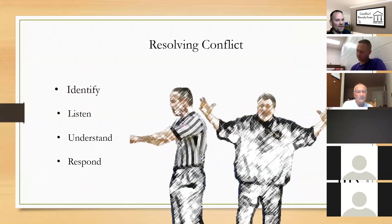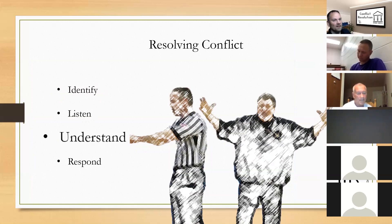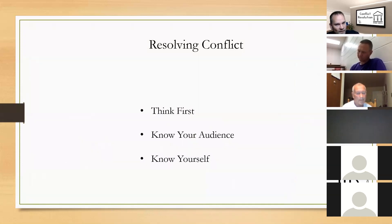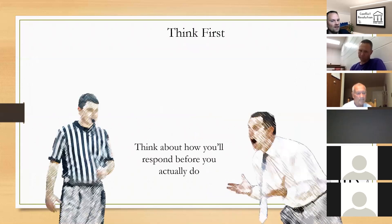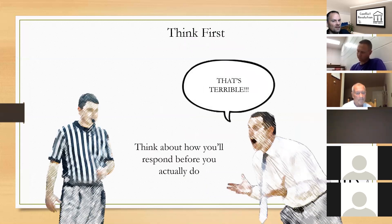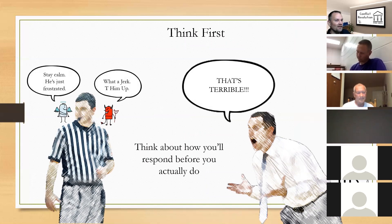We need to understand why they are upset. To do this, think first — know your audience, and know yourself. He yells at you and tells you you're terrible. Think about what you're going to say before you say it, because you've got your bad side that just wants to tee him up and throw him out, and your good side saying hold on, it's not so bad. There are lines that need to be crossed, and every official has a different line.